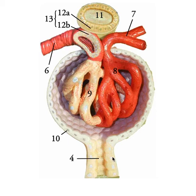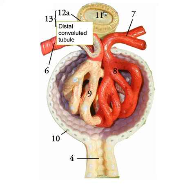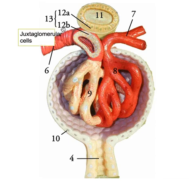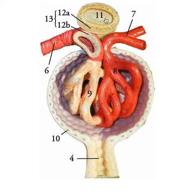Anatomically, the JG cells or juxtaglomerular cells are located here. This collection of cells at 12a is the distal convoluted tubule — the filtrate has come all the way out, gone through the loop of Henle, and all the way back around. There are specialized columnar epithelial cells here called the macula densa, which are touching up against the juxtaglomerular cells. The macula densa is really important for monitoring the osmotic concentration of the distal convoluted tubule.